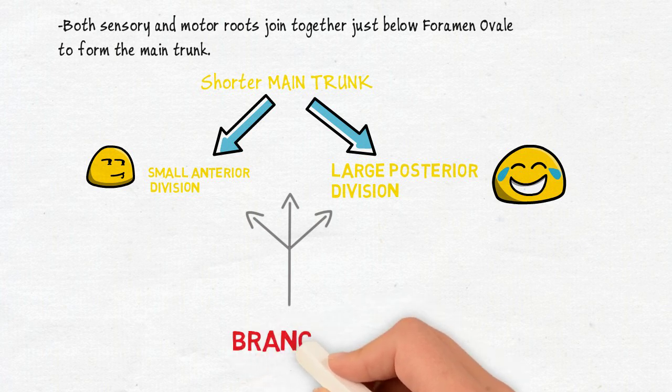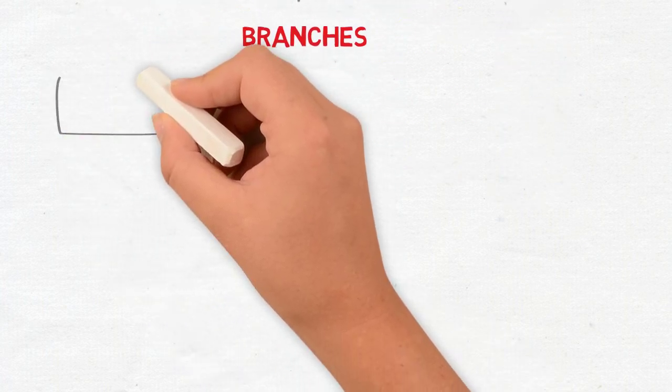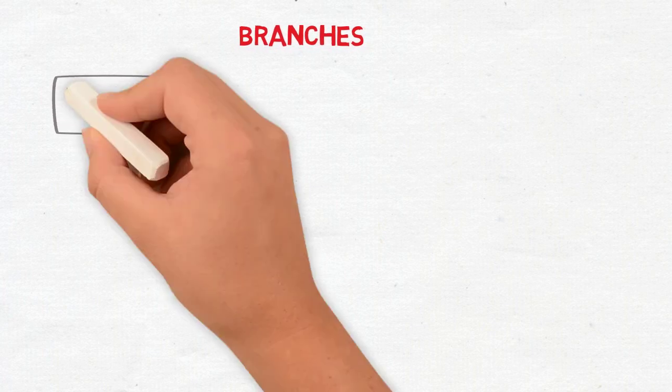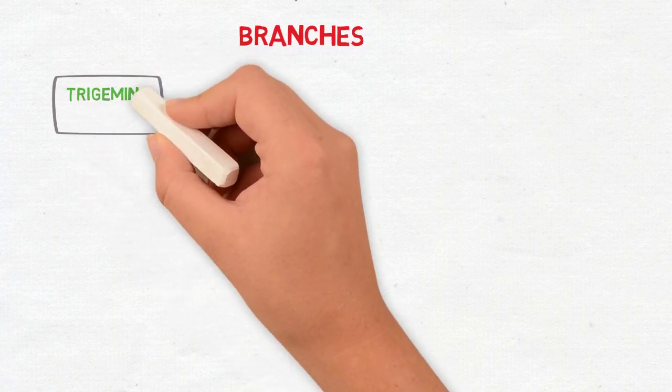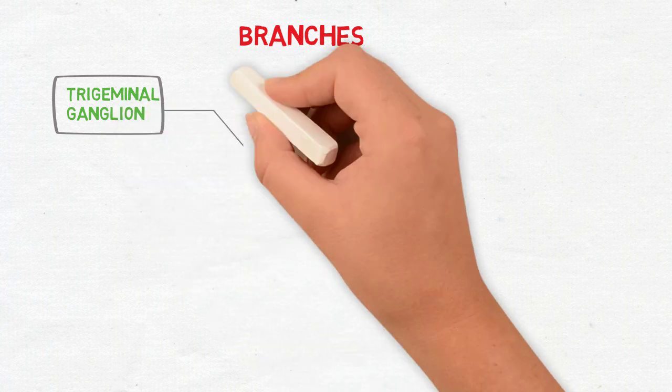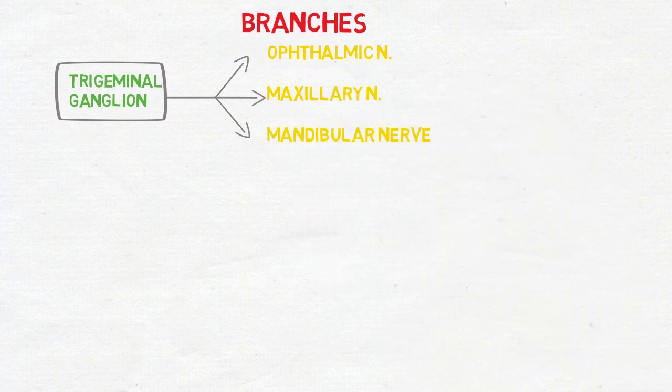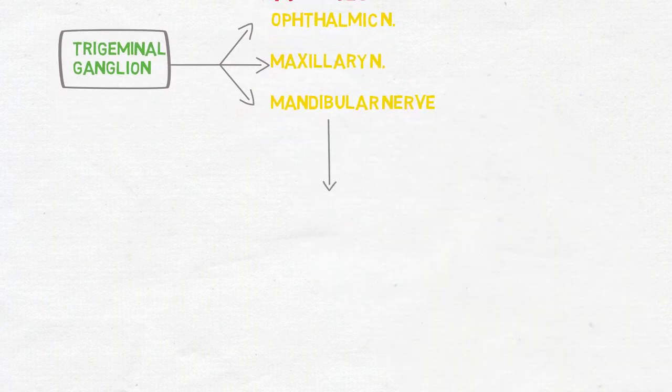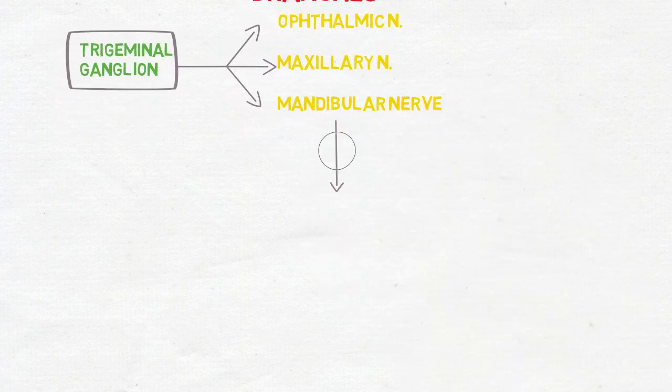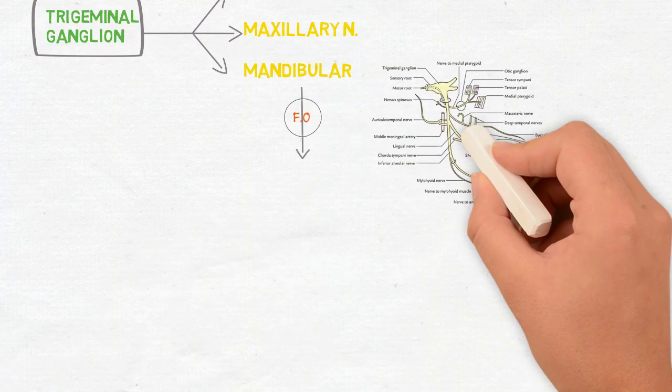The branches of the nerve are derived from all these three parts. As you all know, the mandibular nerve is originated from the trigeminal ganglion. As said earlier, it is the largest division among the three branches of the trigeminal nerve. Both sensory and motor roots of the nerve pass through the foramen ovale to form the main trunk.